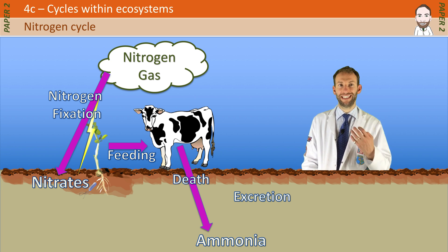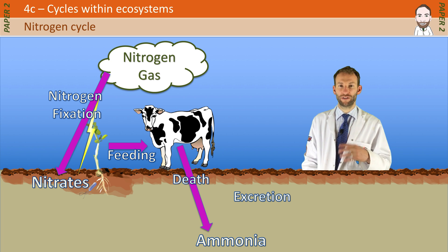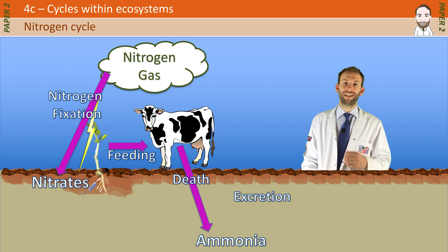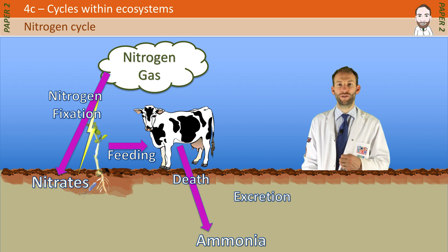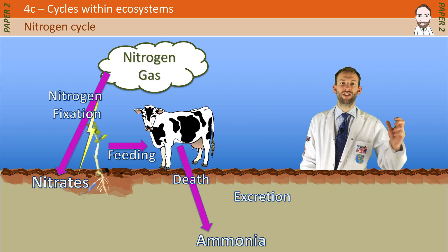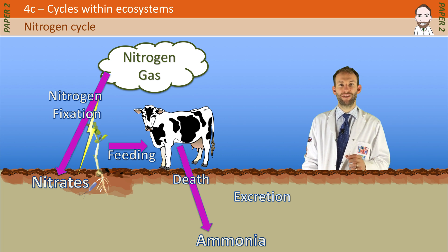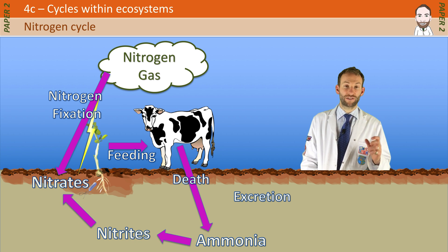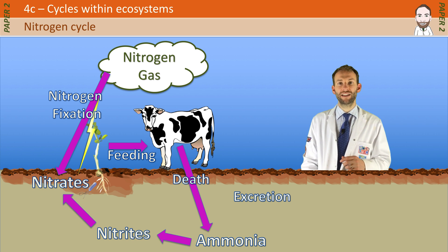There are decomposing bacteria — decomposers — that can break down dead organisms and release that nitrogen in the form of ammonia back into the soil. That ammonia then needs to be converted back to nitrates, which happens in a couple of stages: it goes to nitrites first, then to nitrates, and that is done by a particular type of bacteria called nitrifying bacteria.